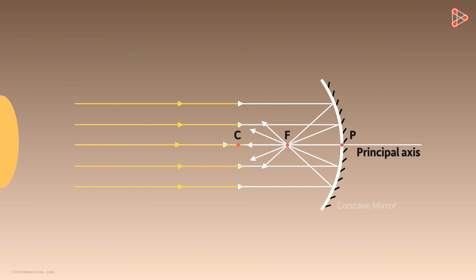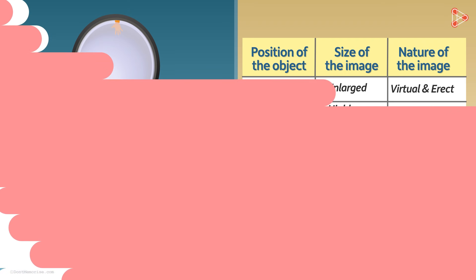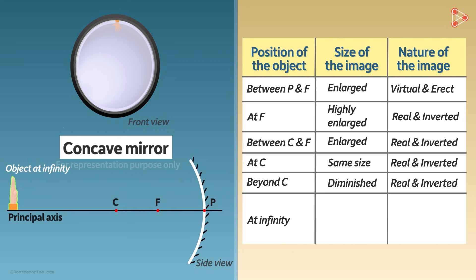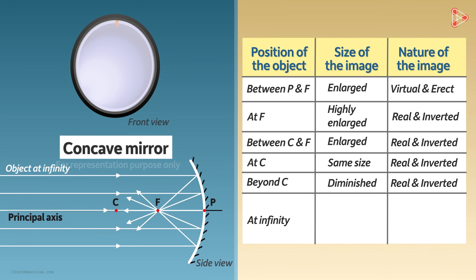Sun is at a very large distance away from the earth and hence we consider the rays of light from it reaching the surface of the earth to be almost parallel. The image of the Sun will be formed at the principal focus. Similarly, if any object is kept infinitely far away from the mirror on the principal axis, all the rays from it can be thought of as travelling parallel to each other. After reflection, they will all converge at the focus.